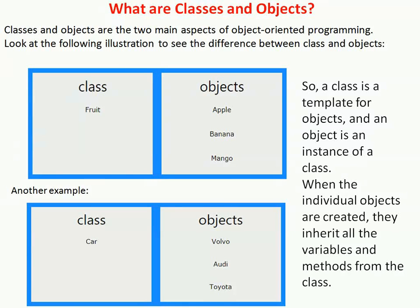These are some physical and logical entities. The object has been characterized into three parts: state, behavior, and identity. State represents the data and the value of an object. Behavior represents the functionality of an object, such as deposit and withdraw — these are some behaviors of a bank.